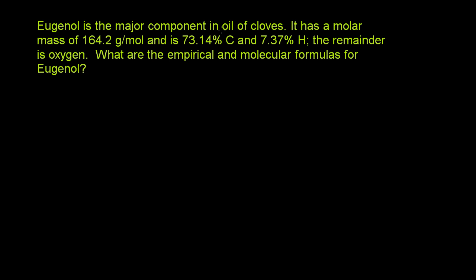Eugenol is a major component in oil of cloves. It has a molar mass of 164.2 grams per mole and is 73.14 percent carbon and 7.37 percent hydrogen. The remainder is oxygen. What are the empirical and molecular formulas for eugenol?